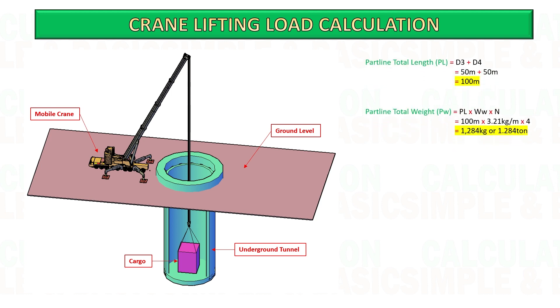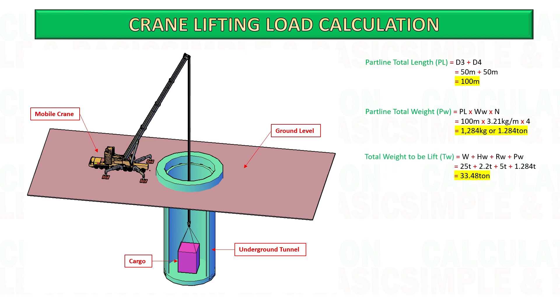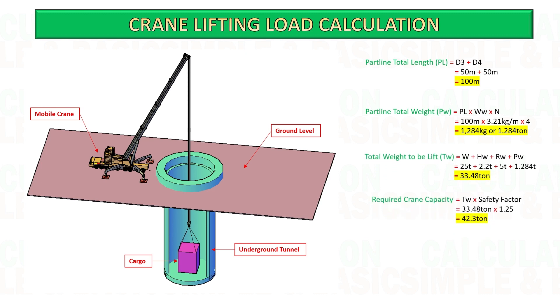Summary: since the cargo is below the ground level, we need to add the part line weight, which causes additional weight that we must consider when choosing the crane capacity.